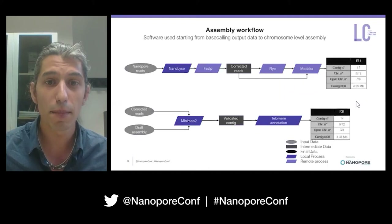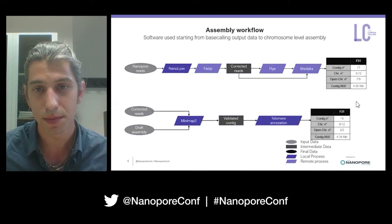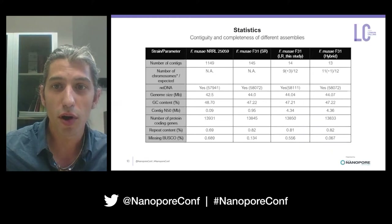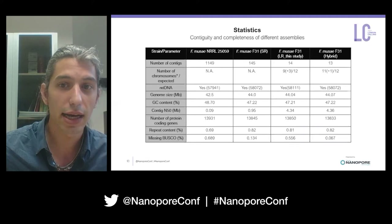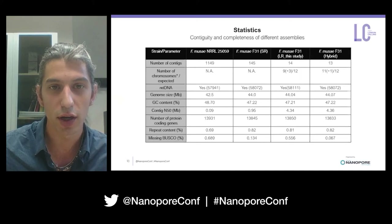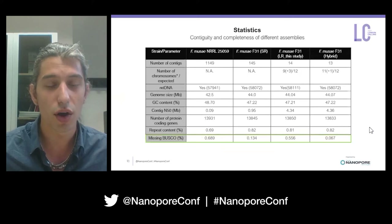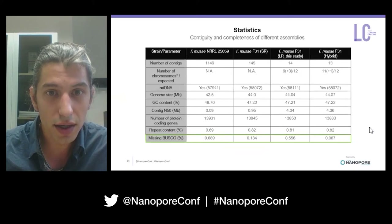Closed chromosomes are chromosomes in which we find the telomeric region at both borders. Here is the core slide of the work — a statistical analysis among the different assemblies. The table reports on the first column the NCBI strain obtained with short reads; the other three columns include data of our Fusarium musae: the best short-read assembly, the long-read assembly from this study, and the hybrid assembly. We evaluated completeness using BUSCO based on the Hypocreales database, and as you can see, there are no significant differences in missing BUSCO genes.